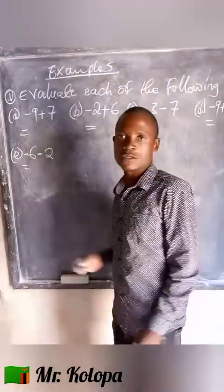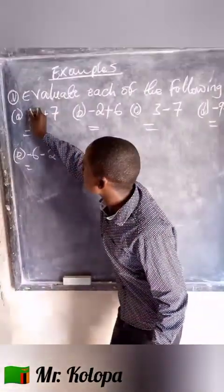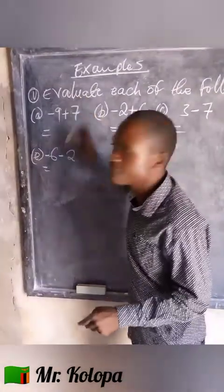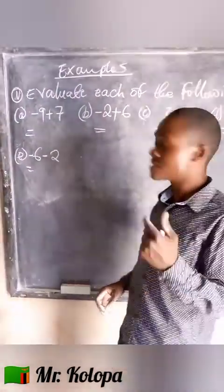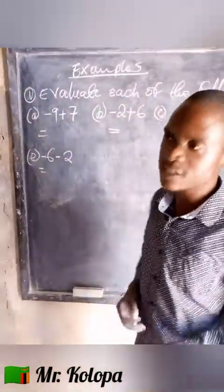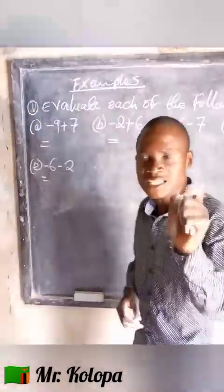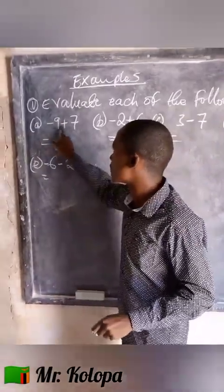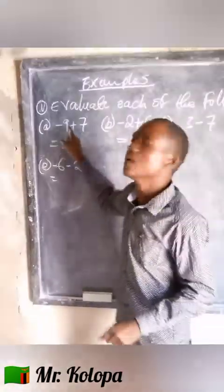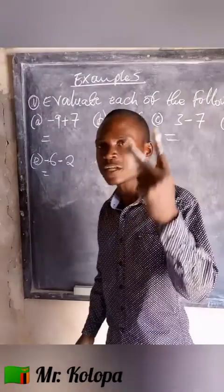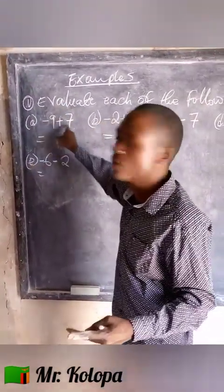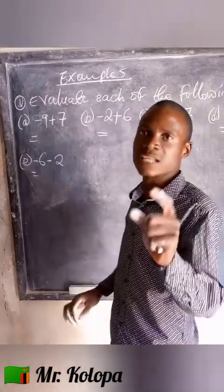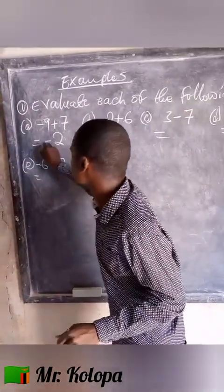How can you know? You look at the sign in front of 9 — the sign is negative. Then the sign in front of 7 is positive. So we are having different signs. Under different signs, when you have different signs you subtract, and your answer should maintain the sign of the bigger number. So we are going to subtract: 9 minus 7 gives us 2. Then you look at the sign of the bigger number — 9 is bigger than 7 and it is having a negative, so the answer is negative 2.